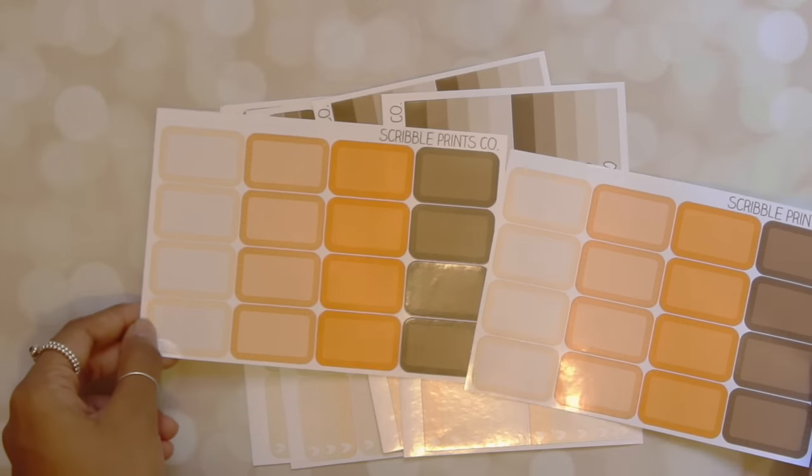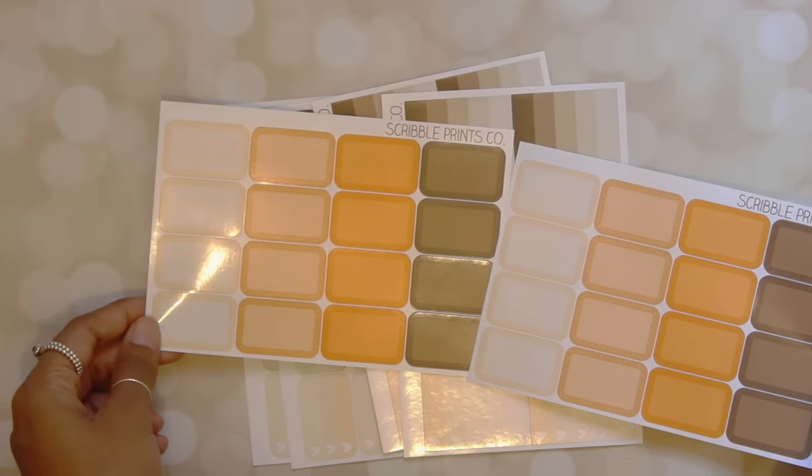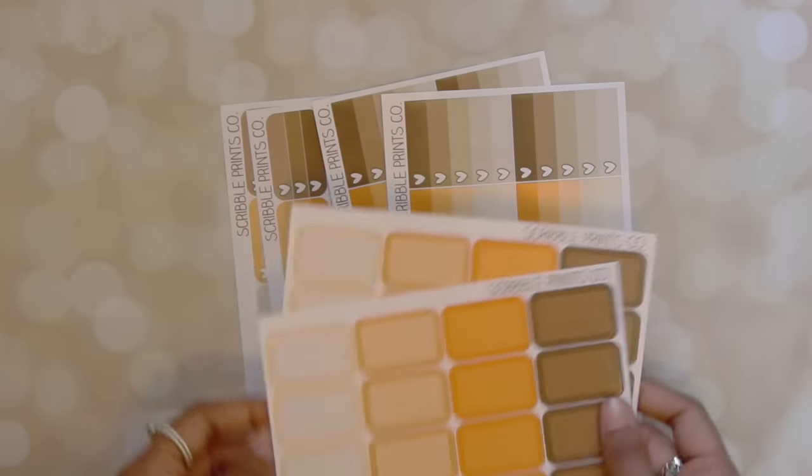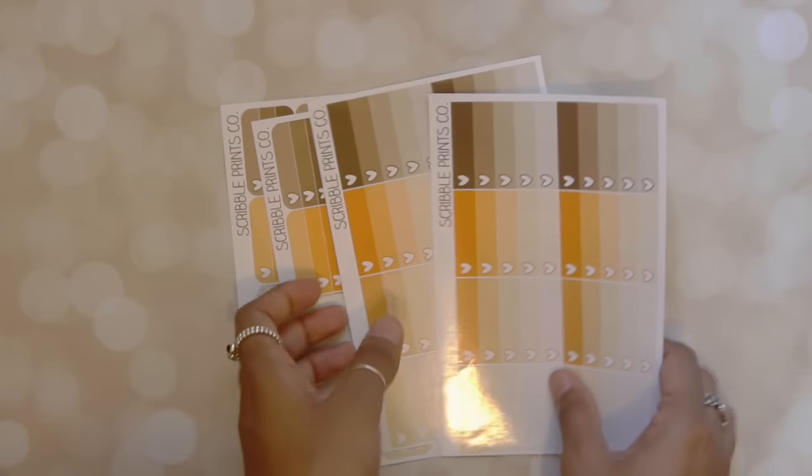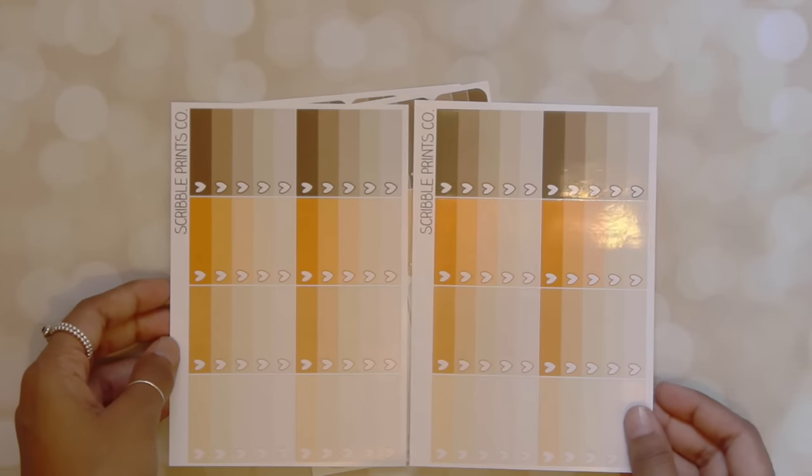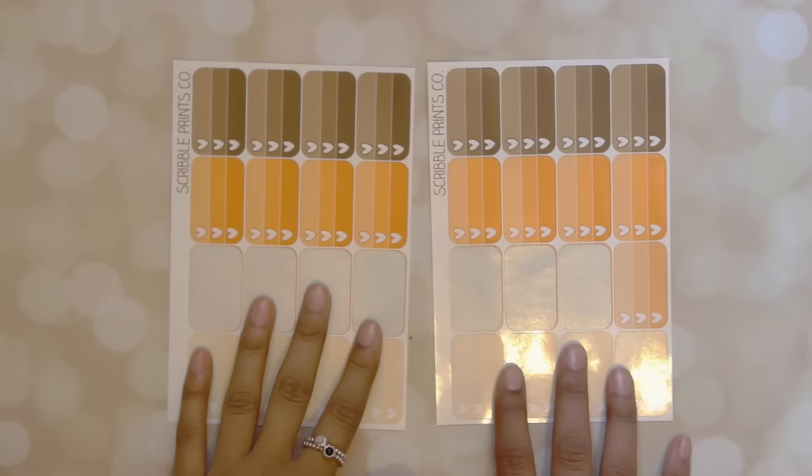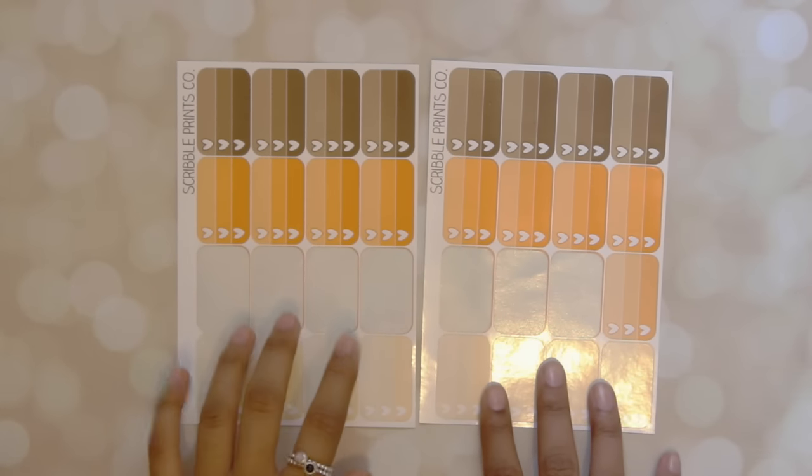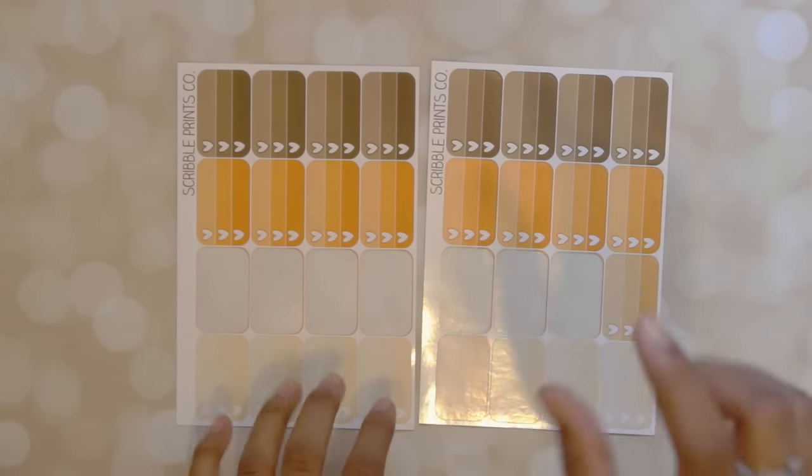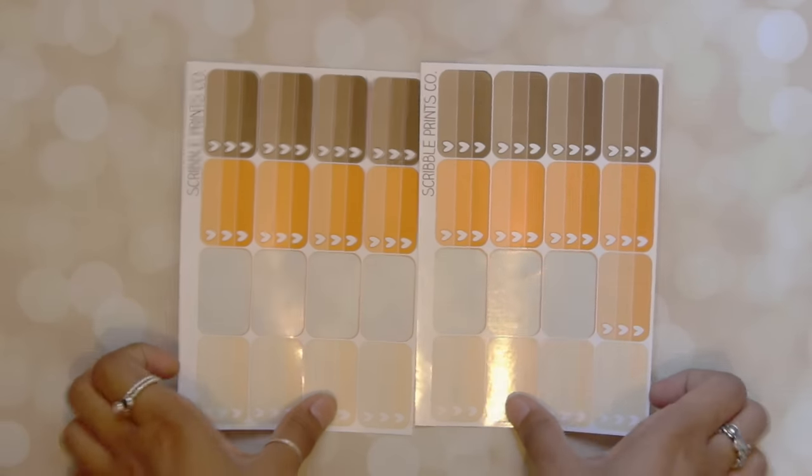So I got two sets of these half boxes. Super really pretty colors here. I got two sets of the full boxes. Really pretty. And two sets of the three heart checklist half boxes. I used these to meal track on the bottom bar of my vertical planner.